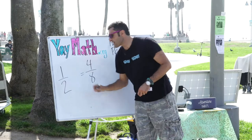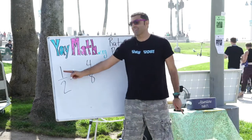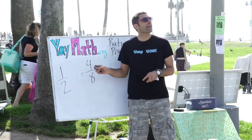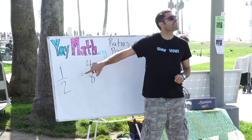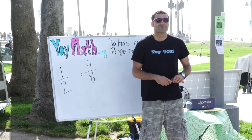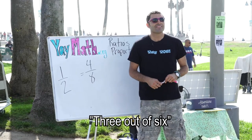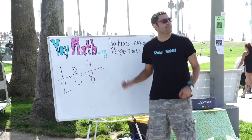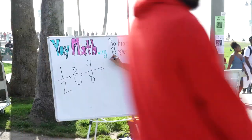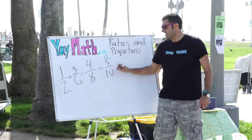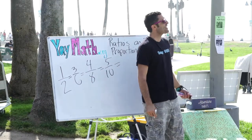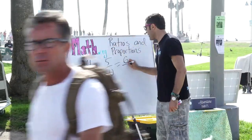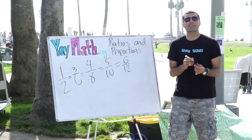I wrote it over here for a reason. Because if you have a ratio that's the same, that's called a proportion. Can you think of other proportions that four over eight is the same as? Three out of six — that's the same proportion. How about something bigger? Five out of ten. Six out of twelve. So as long as you have the same ratio, that's called a proportion.